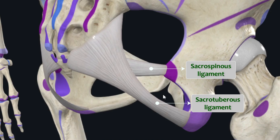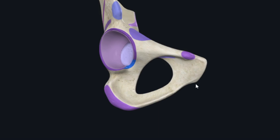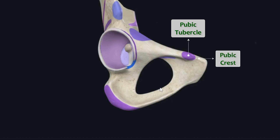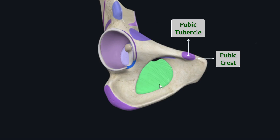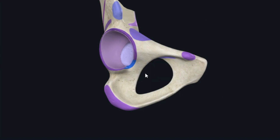Now let's talk about pubis. From a lateral view you can see a small raised eminence along the lateral end of the body of pubis — this is the pubic tubercle. The region medial to the pubic tubercle is called the pubic crest. This foramen-like structure found inferior to the superior pubic ramus and superior to the ischiopubic ramus is called the obturator foramen, which is filled later in life by a membranous structure called the obturator membrane.